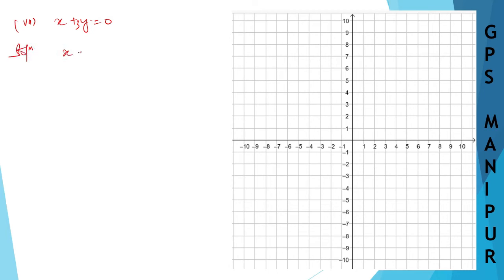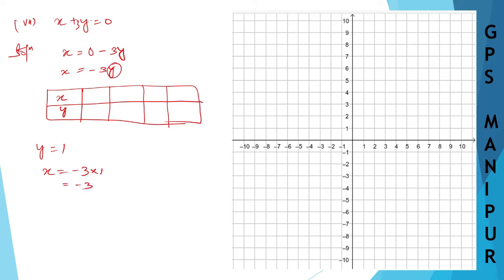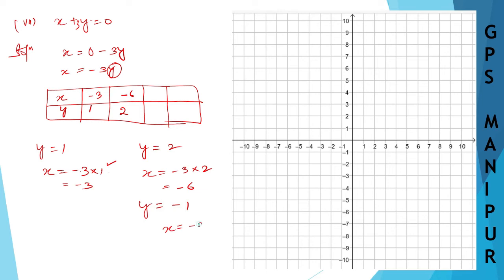Solution: x plus 3y equal to 0, so x is equal to 0 minus 3y, which is minus 3y. Draw a table with columns x and y. When y is 1, x will be minus 3 into 1, which is minus 3. When y is 2, x will be minus 3 into 2, which is minus 6. When y is minus 1, x will be minus 3 into minus 1 — minus times minus is plus — so x is 3.